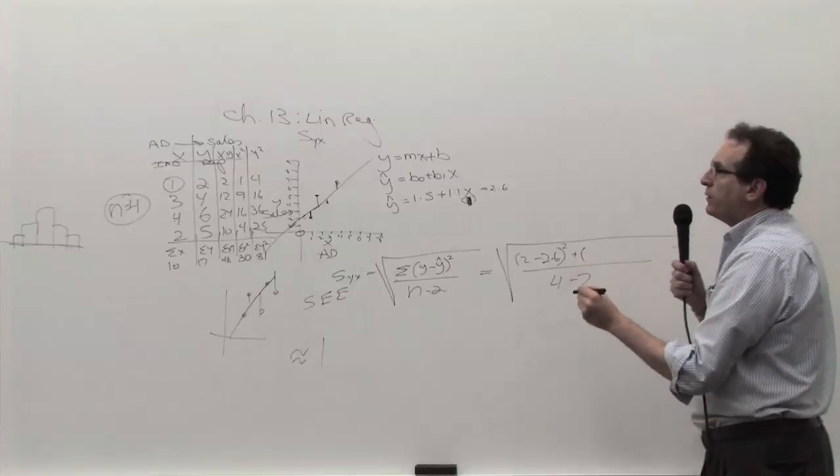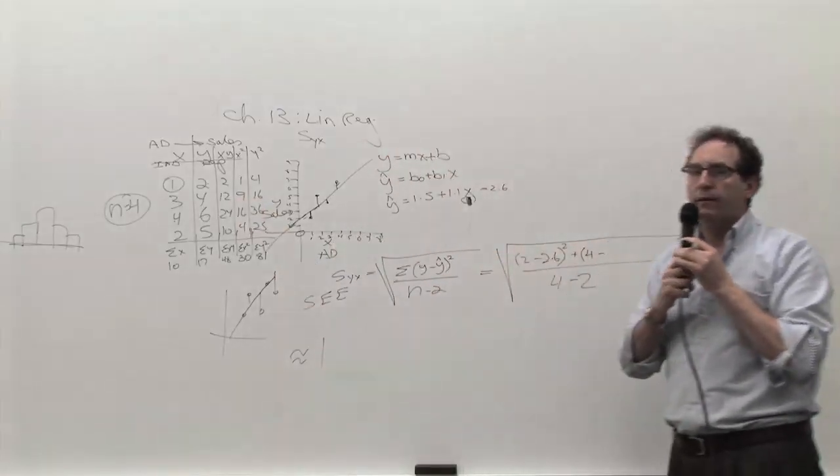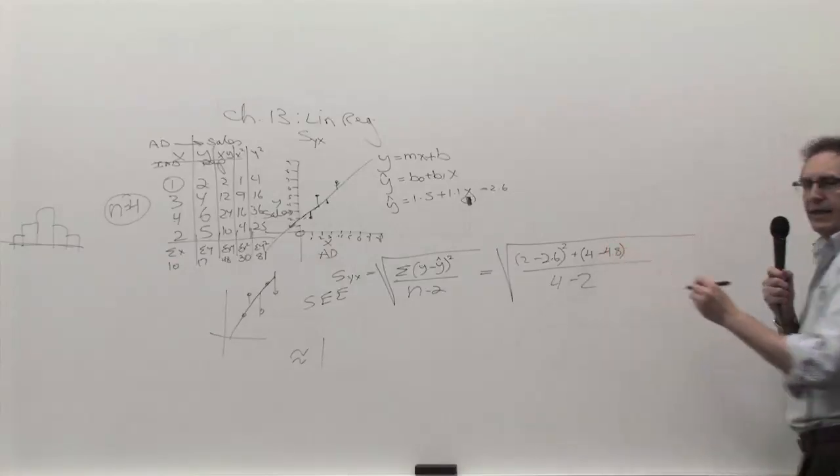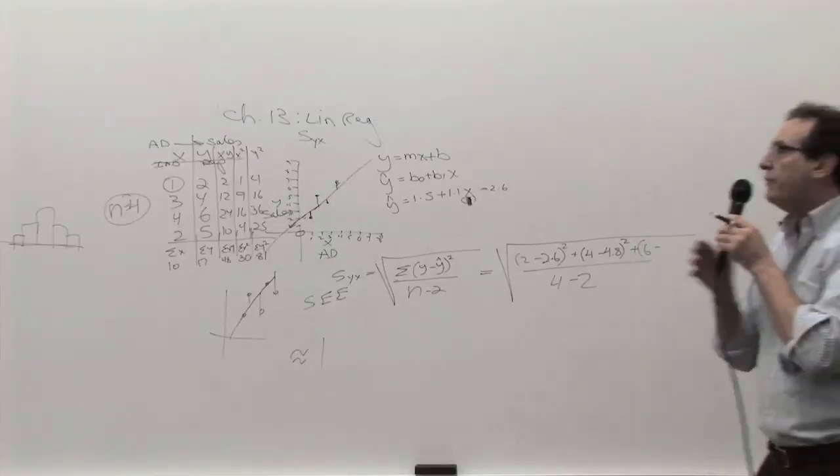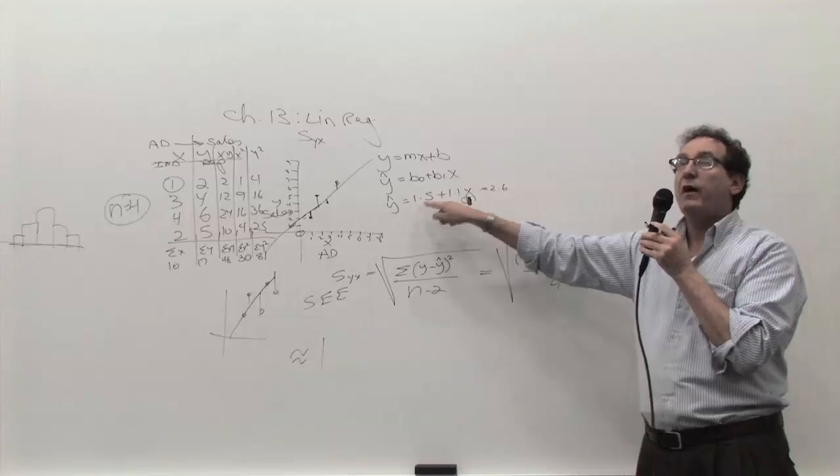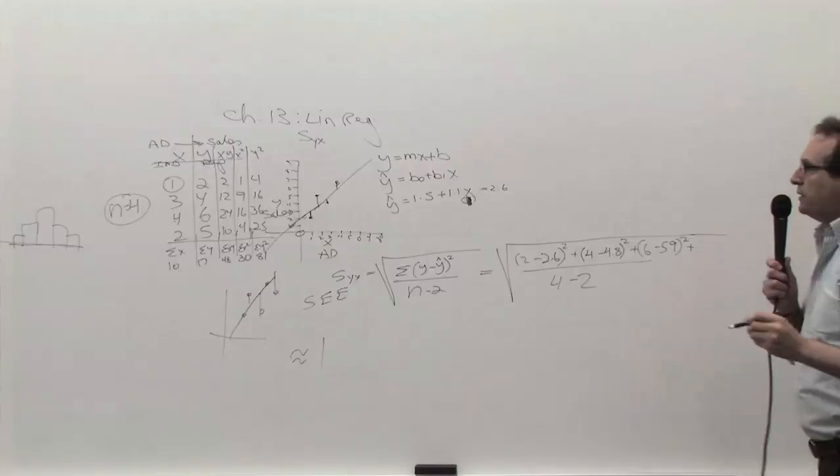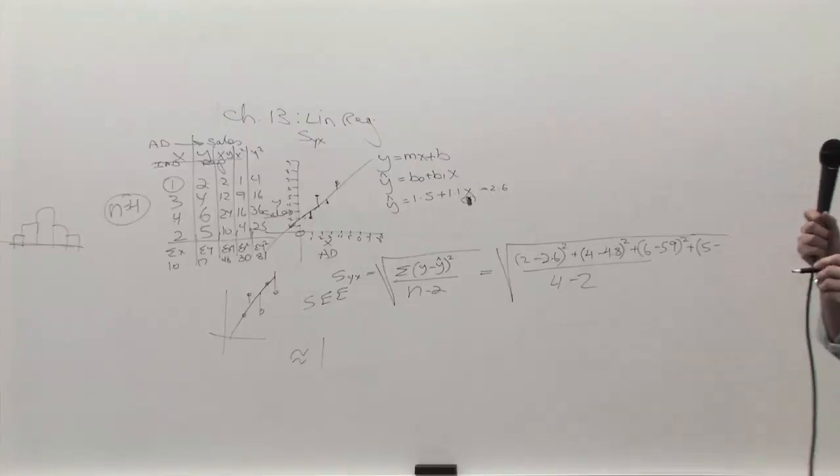Then you do the same thing for the next Y. The next Y was a four. Can somebody quickly tell me if you plug in X equals three into this equation, what are you going to predict it to be? How much is it? I'll take your word for it. Okay, 4.8. If anybody disagrees with Tingru, tell me. And then the next thing is going to turn out to be the next Y value is six. And what's the Y hat? If you plug in four into the equation, four times 1.1 is 4.4 plus 1.5 is 5.9. So the next calculation is 5.9. And the last calculation is five minus, and if you're plugging now two into the equation, two times 2.2, 3.2, 3.7.